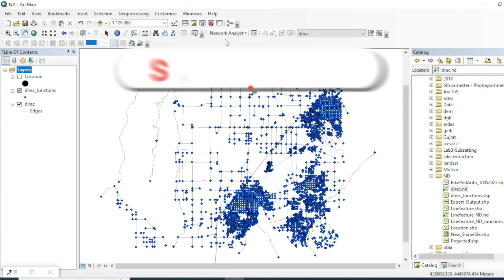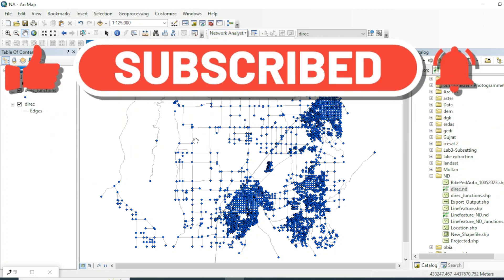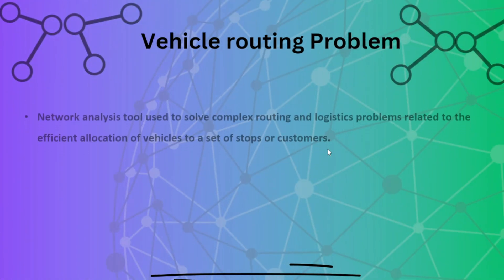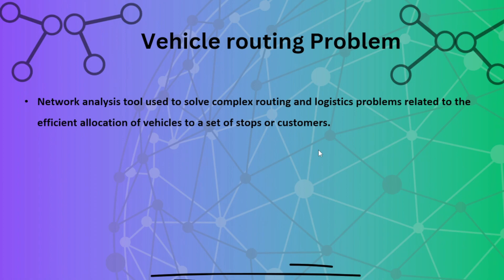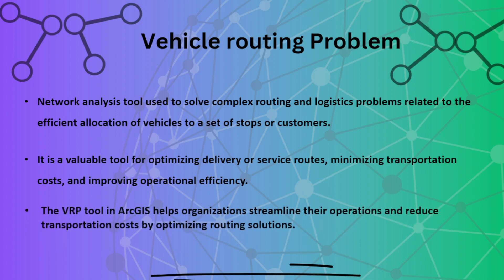Assalamu alaikum friends, welcome to another tutorial. In this network analysis tutorial we will see how the Vehicle Routing Problem tool works in our GIS desktop. The VRP tool is used to solve complex routing and logistics problems related to efficient allocation of vehicles from a depot toward customers or orders. It is a valuable tool for optimizing delivery services and minimizing transportation cost, and helps in transportation management.